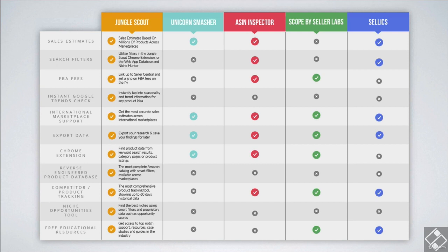It has international marketplace support, and all the data you dig up through the web app can be exported into spreadsheets or printed out. The Chrome extension gives you on-site data as you browse Amazon. There are also free educational resources from Jungle Scout, plus a competitor and product tracking tool — you can plug in competitors' products, track them over time, see their inventory levels, how many they're selling, and their sales rankings. It's very powerful and helpful. We're going to get into deep detail with Jungle Scout in the next few lectures, and I'll see you in the next lecture.